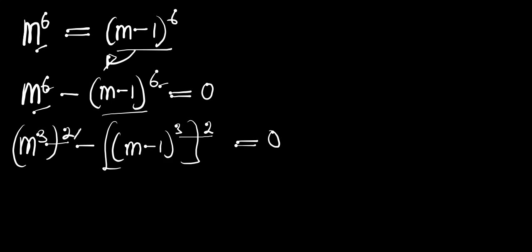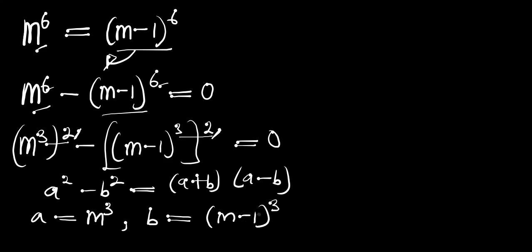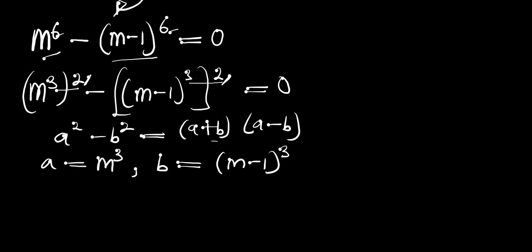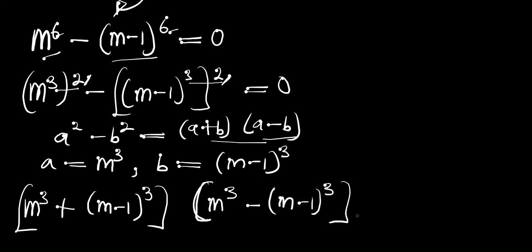Now look at what we have: the exponent here is 2 and the exponent here is 2, so we can make use of the difference of two squares — a squared minus b squared equals (a plus b)(a minus b). From this equation our a equals n to the power 3 and b equals (n minus 1) to the power 3, giving us [n³ + (n-1)³] times [n³ − (n-1)³] equals 0.